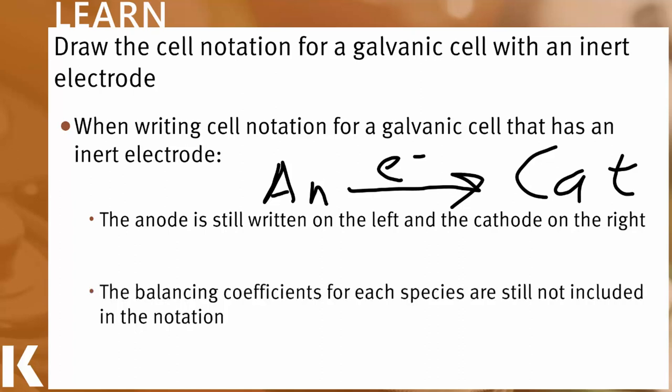Another thing that stays the same is that we still do not include the balancing coefficient for any species in the notation. We're simply looking at what gets oxidized and what gets reduced. We're not looking here at the stoichiometry. So all that stays the same.